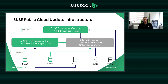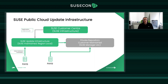Let's start with how to access updates. Depending on the type of workload and how you're consuming the SUSE subscription, there are different options. For this session, we'll focus on the on-demand or pay-as-you-go model, where you purchase both the infrastructure and the SUSE subscription via AWS. There are two main options: SUSE's public cloud update infrastructure, or a private repository, and each has pros and cons.